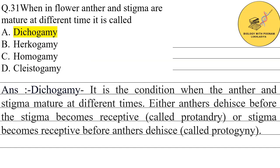The next question is: when anther and stigma are mature at different times, it is called what? The answer is dichogamy. Dichogamy is a condition when anther and stigma mature at different times — either the anther matures before the stigma becomes receptive, called protandry, or the stigma becomes receptive before the anther matures, called protogyny.